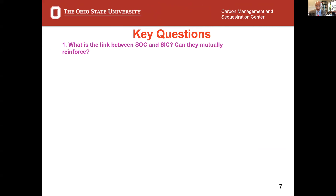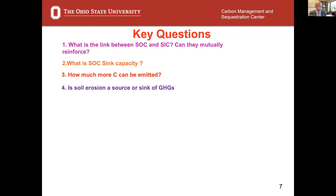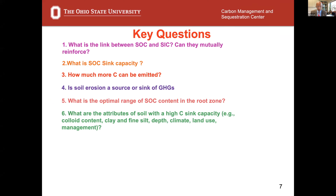What is the link between soil organic and soil inorganic carbon? Can they mutually reinforce when they are in soil? What is the soil organic carbon sink capacity and how can it be realized? How much more carbon can be emitted before it becomes a tipping point? Is soil erosion a source or sink of greenhouse gases? What is the optimal range of soil organic carbon content in the root zone? What are the attributes of soil with a high carbon sink capacity — colloid content, clay, fine silt, depth, climate, land use, management? How can the permanence of soil carbon be increased so that once it's put in the soil, it stays there for decades if not centuries or millennia?